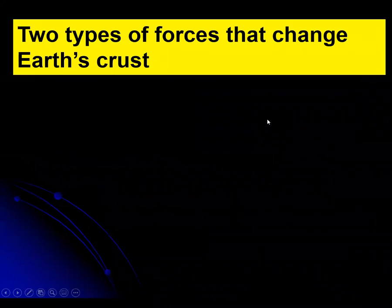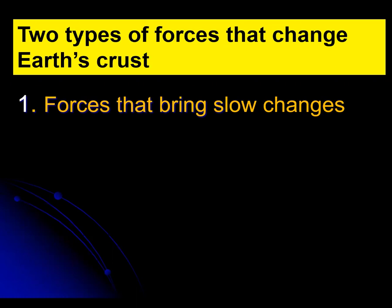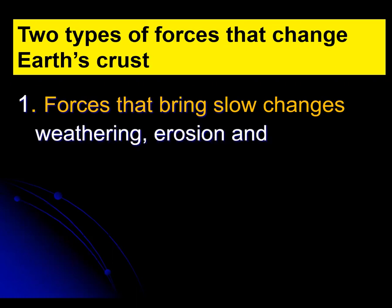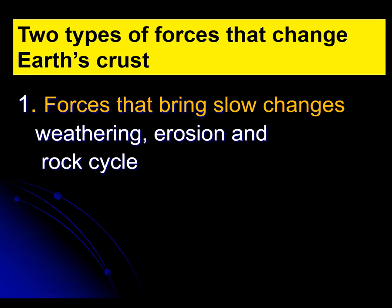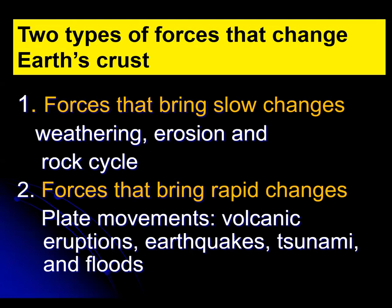Let us begin by identifying the two types of forces that change Earth's crust. The first are forces that bring slow changes: weathering, erosion, and rock cycle. These processes are natural but can also be influenced by human activities, and they happen slowly. The other type are forces that bring rapid changes, including plate movements that bring about volcanic eruptions, earthquakes, tsunami, and floods. So these are the two types of forces: slow changes and rapid changes.